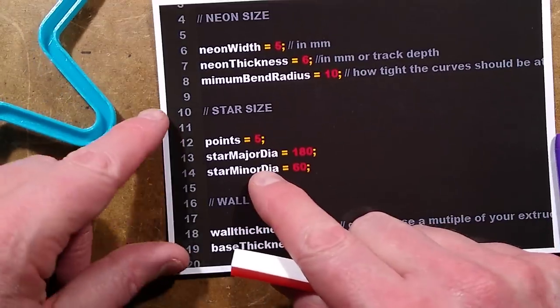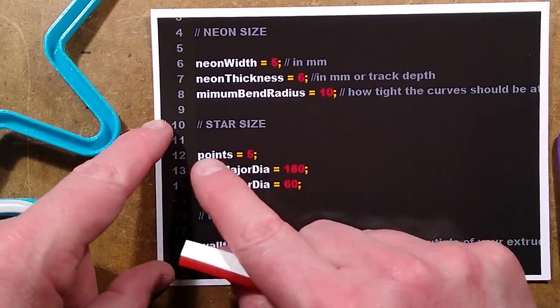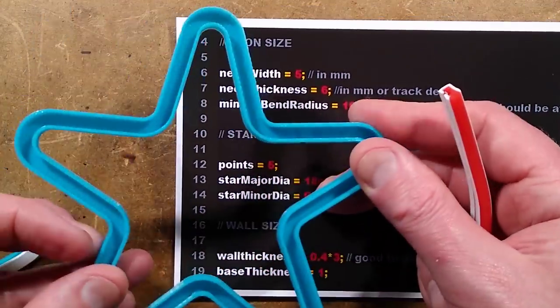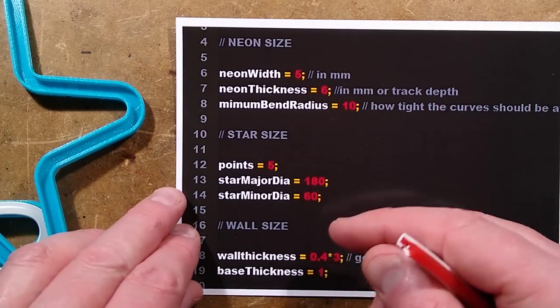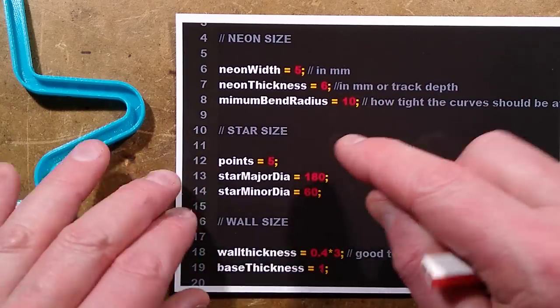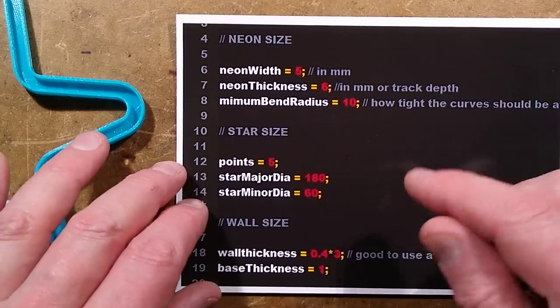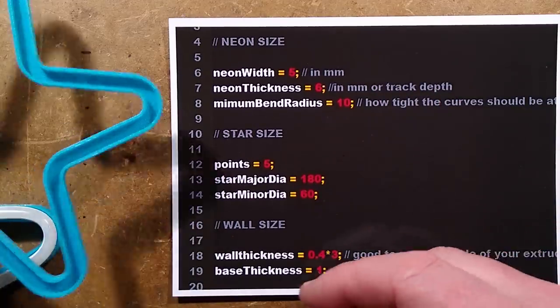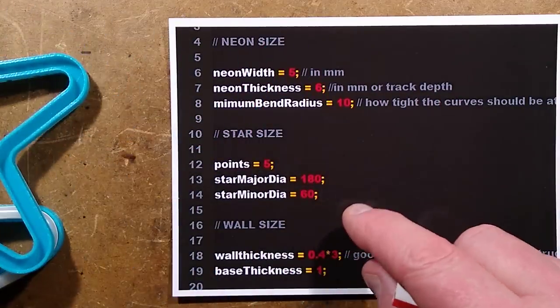Then we have the star size. We've got the point 5 that's a 5 pointed star. It will work for 3 pointed star, 4 pointed star, 7 pointed star, whatever you want. As it goes bigger it will tend to just get a bit sort of ripply, all distinctive shapes. The classic one though is 5 points the star.